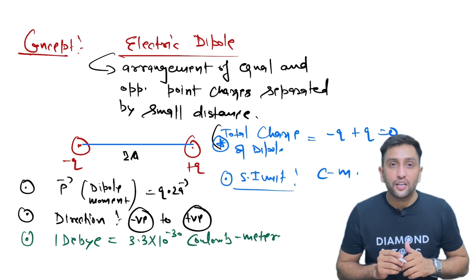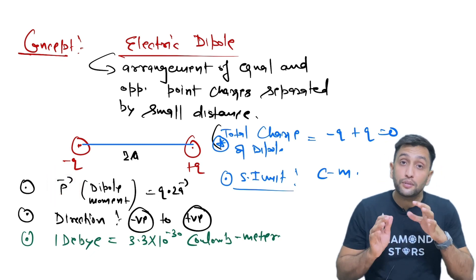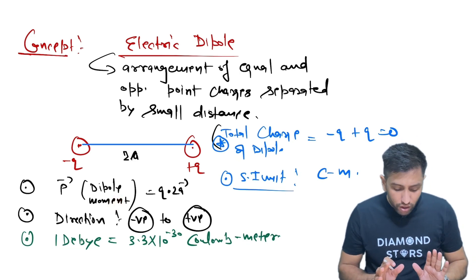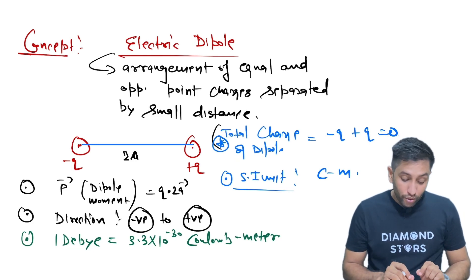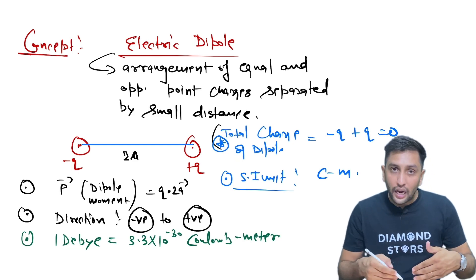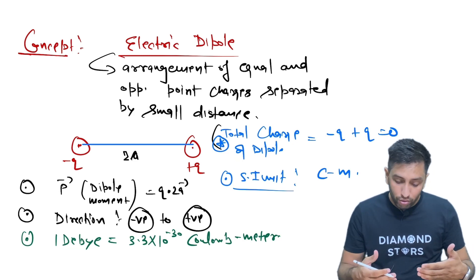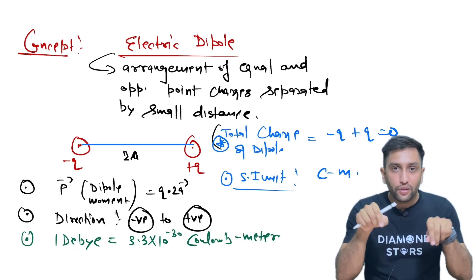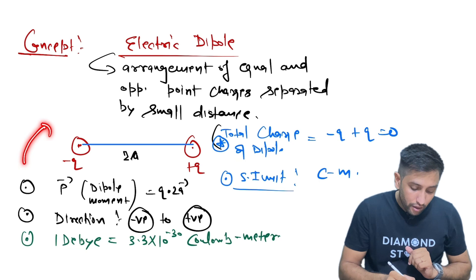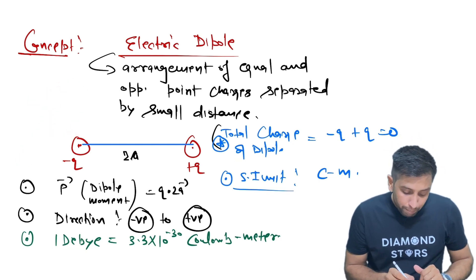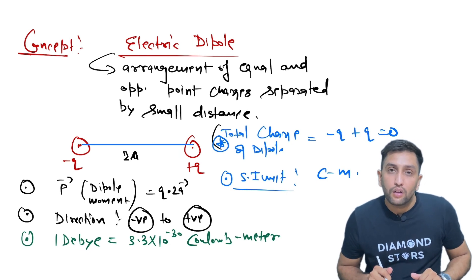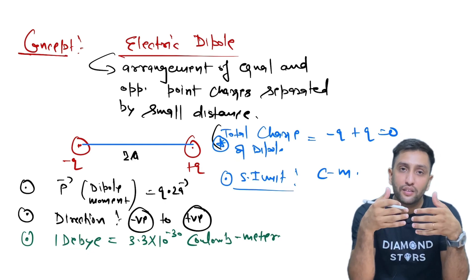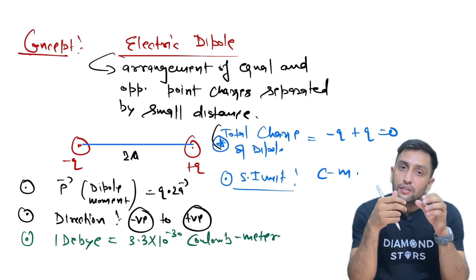How is this electric dipole represented? It is represented by the p vector — the dipole moment. I hope you all know this; you have studied it in class 12. The dipole moment is represented by the p vector. This electric dipole is represented by the dipole moment vector, which is defined as the charge — you know the charge is of opposite sign but same magnitude q — multiplied with the separation between the two charges, which we have taken as 2a. So the formula is p = q × 2a.